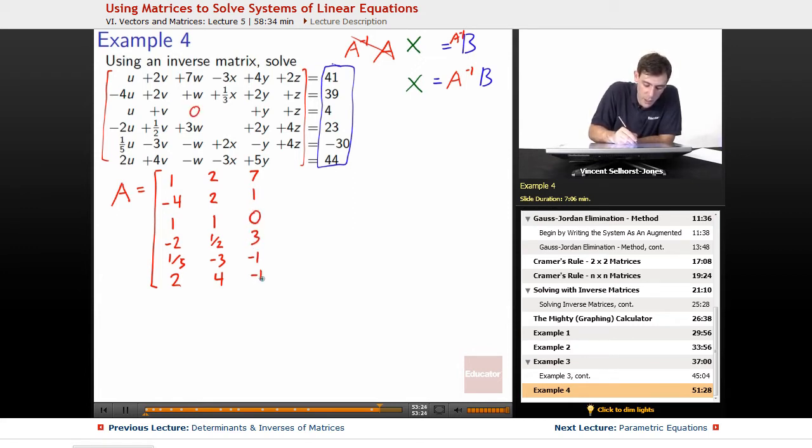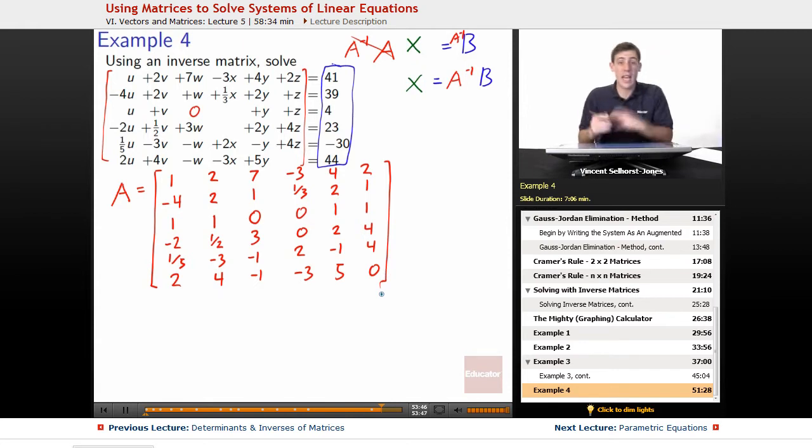Negative 3X, 1X, 1 third X, 0X, 0X, 0X, 2X, negative 3X, 4Y, 2Y, 1Y, 2Y, negative 1Y, 5Y, 2Z, 1Z, 1Z, 4Z, 4Z, 4Z, 0Z. So what you do is you take A and you enter that into your graphing calculator, right?